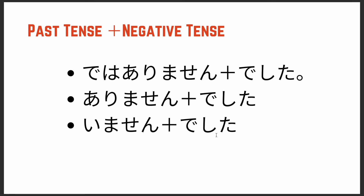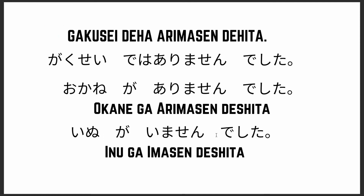Some examples: 'gakusei dewa arimasen deshita' — I was never a student. We've seen 'gakusei desu' (I am a student), 'gakusei deshita' (I was a student), and now 'gakusei dewa arimasen deshita' means you've never been a student. 'Okane ga arimasen deshita' — I've never had any money. 'Inu ga imasen deshita' — maybe someone wanted a pet but never got one, so: I've never had a dog.